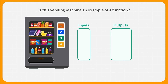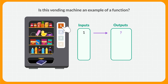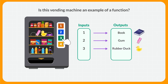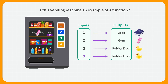Together, let's decide if this vending machine is an example of a function. Pressing the first button gives us a book. The input is the button pressed, and the output is what comes out of the machine — the book. When we press the second button, we get a pack of gum. So far, each input has exactly one output, so it is a function. When the third button is pressed, a rubber duck comes out. That's a different input and output, so still a function. Another person presses the third button and gets a rubber duck — button 3 still only has one type of item coming out.